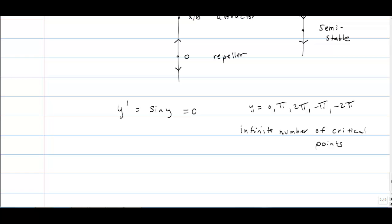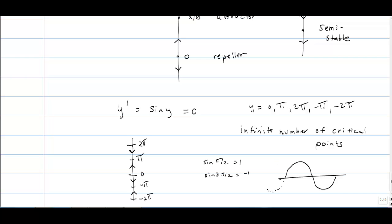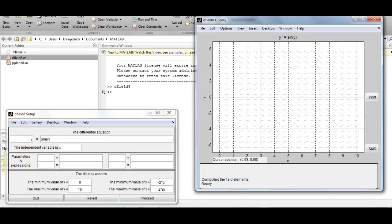Let's look at another example: y prime = sine of y. To find critical points, we set the first derivative to 0. Sine of y = 0 when y = 0, or pi, or 2 pi, or negative pi, or negative 2 pi — in fact there are an infinite number of critical points. We put these critical points on our phase portrait. Test points between critical points: sine(π/2) = positive 1 (increasing slope), sine(3π/2) = negative 1 (decreasing slope). This pattern repeats infinitely in both directions.